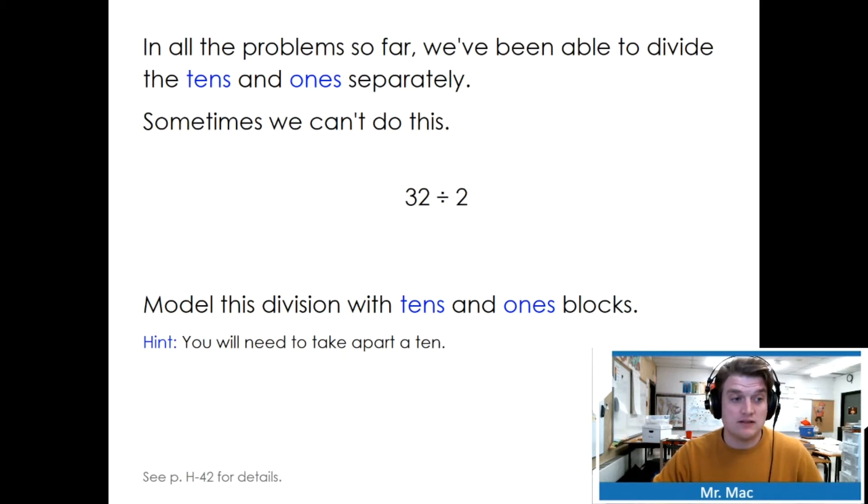Sometimes we can't do this. Model this division with tens and ones blocks. You'll need to take apart the 10. We would need to draw our two groups. Start by sharing the ones: 1, 2. Continue with the tens: 10, 20, 30. I can't share the 10 blocks, so I'm going to need to break it up into ones, which is 10. I know half of 10. Half of 10 is just 5. So I need to add 5 to both sides. So my actual answer to 32 divided by 2 is 10 plus 6, which is 16.